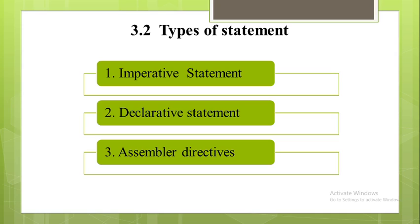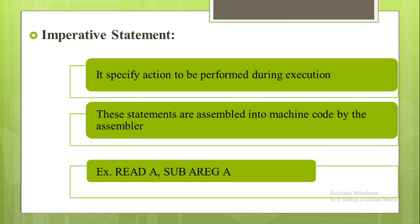Next we will see the types of statements. An assembly program contains three kinds of statements: the first is called imperative statement, the second is called declaration statement, and the third is called assembler directives. We will see each one in detail.